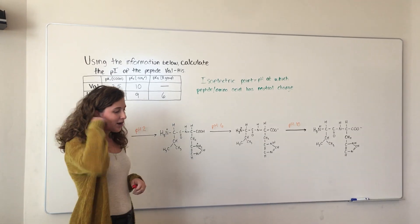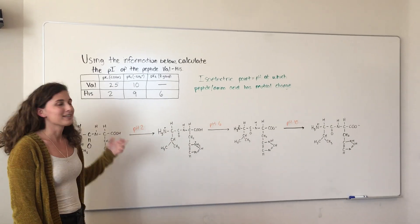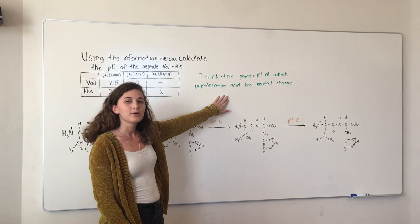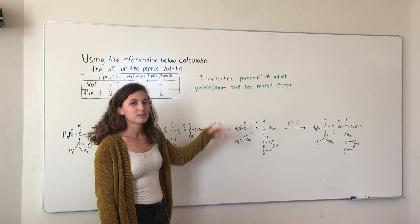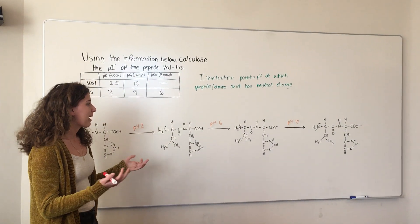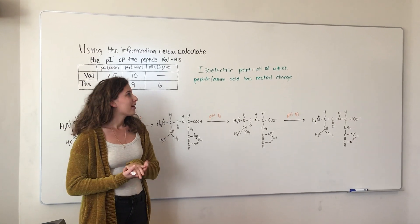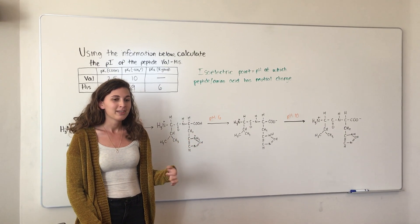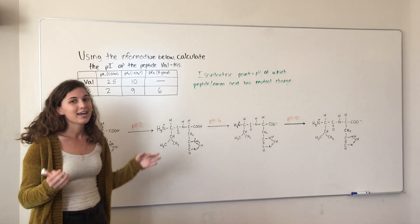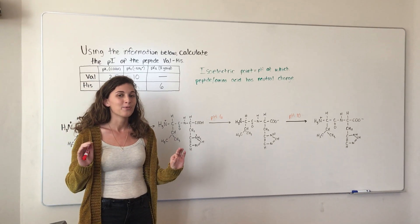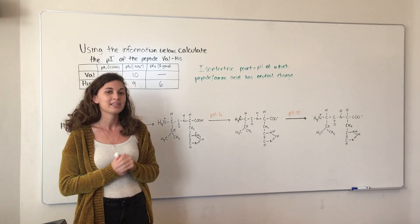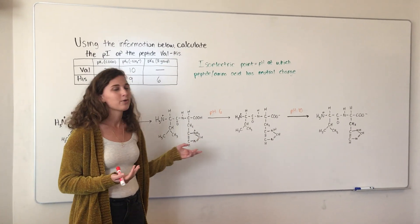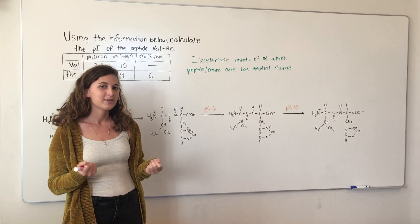The isoelectric point, or PI, is the pH at which the peptide or amino acid has a neutral charge. We just want to figure out when this peptide is going to have a charge of zero. What I found really helpful when doing these problems is to actually draw the peptide, so you can see why it would have a certain charge, see when it would be neutral, and then figure out which pKa's to use from there.